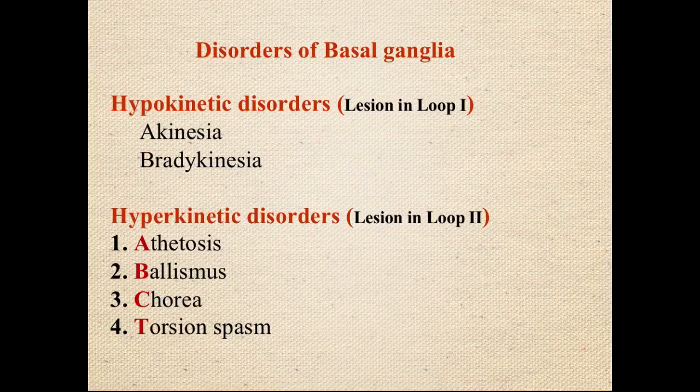Ballismus is a flinging type of limb movement — a sudden jerk of the arm or leg. All these movement disorders mainly affect the distal parts, such as the arm or leg.